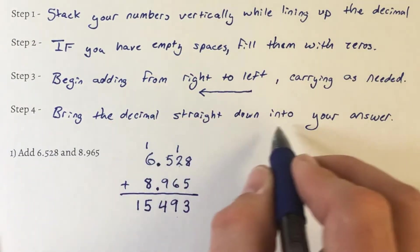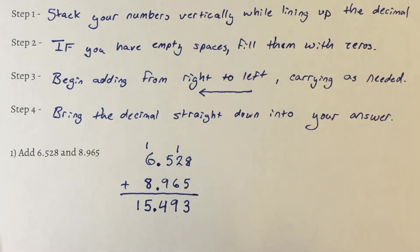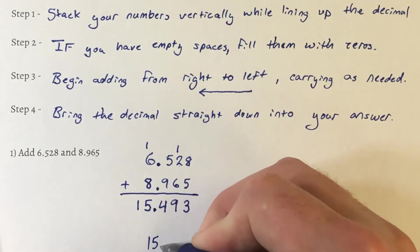Fourth step, bring the decimal straight down into your answer. So our answer is going to be 15.493.